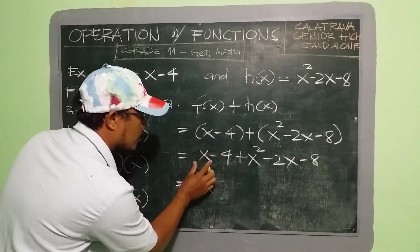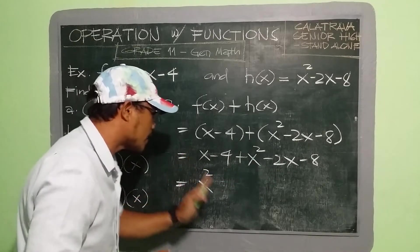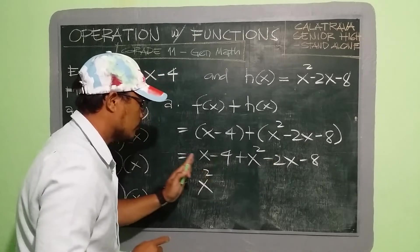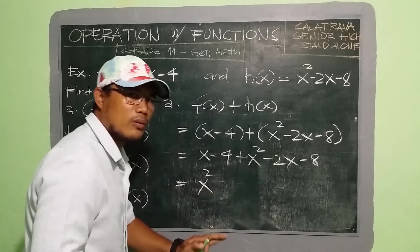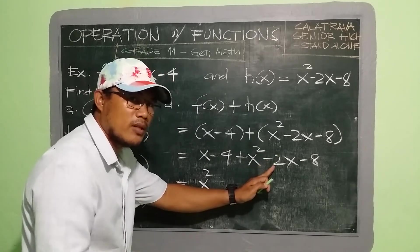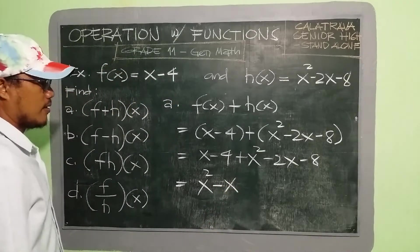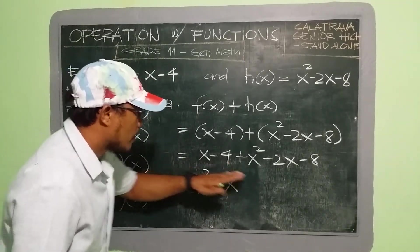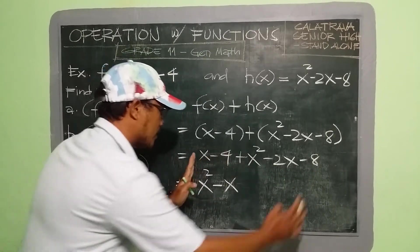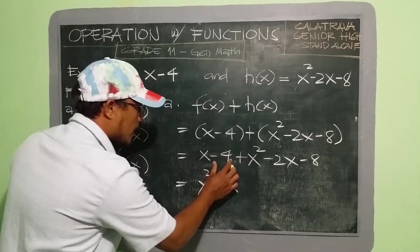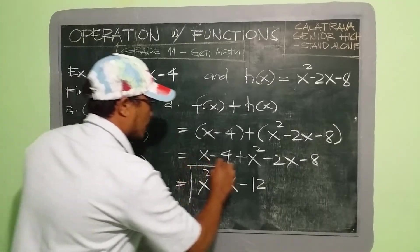Next is our x term. We have 1x and −2x. Since they have different signs, take the difference: negative 2 is bigger, so we get −1x, or just −x. Then we have −4 and −8, same sign, so we combine them: −4 + (−8) = −12. So the final answer is x² − x − 12.